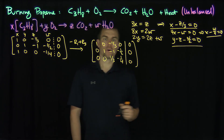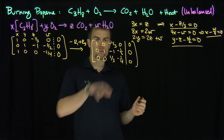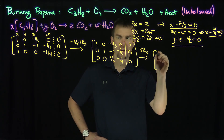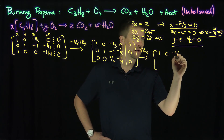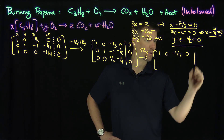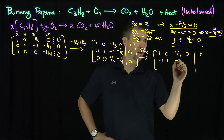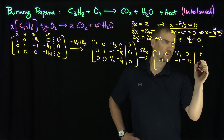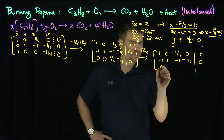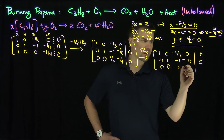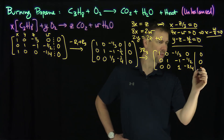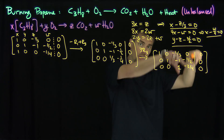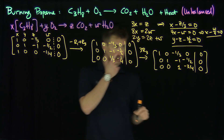Now I scale row 3 by 3 to get a leading 1. After scaling, the matrix becomes: Row 1: 1, 0, negative one-third, 0, 0. Row 2: 0, 1, negative 1, negative one-half, 0. Row 3: 0, 0, 1, negative three-quarters, 0. Remember the augmented column always has zeros because this is a homogeneous system.